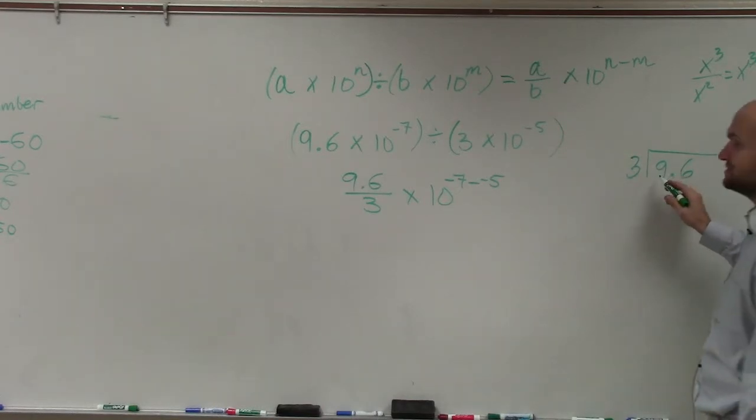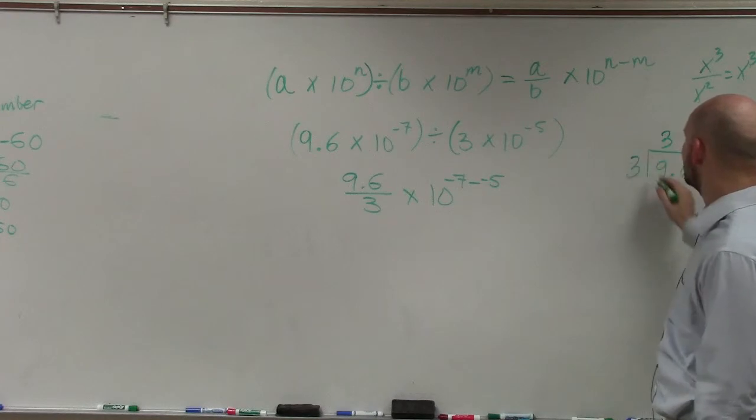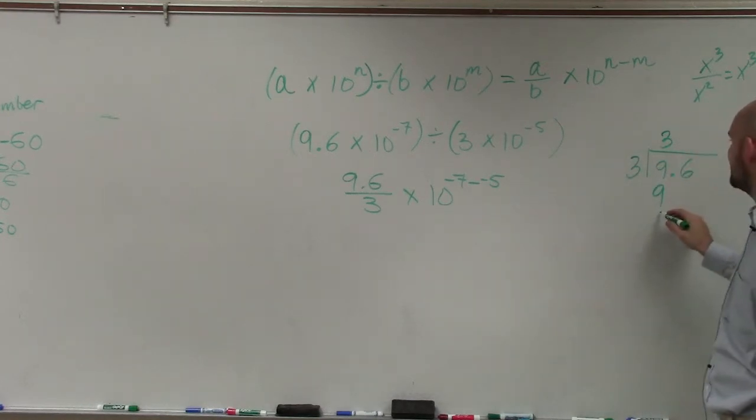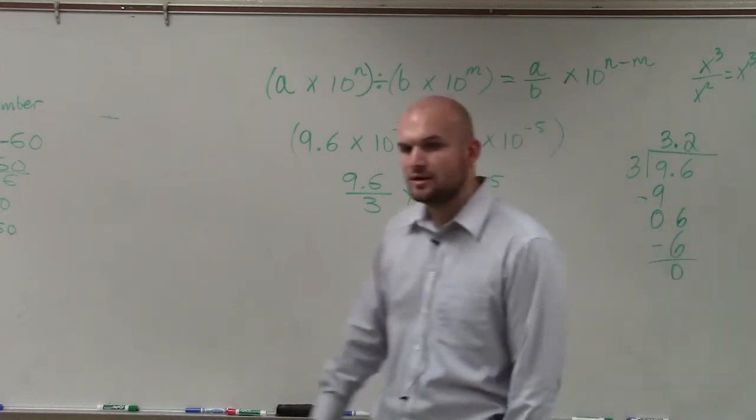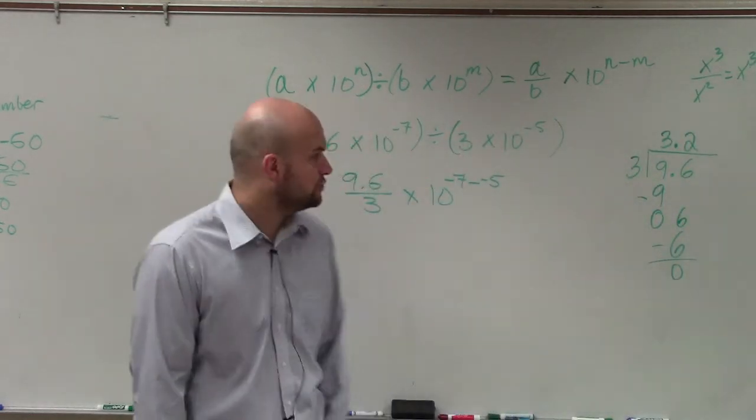So 3 goes into 9 three times. 3 times 3 is 9. Bring down the 0. 3 does not go into 0, so I'll bring in the decimal point and bring down the 6. 3 goes into 6 two times. 3 times 2 is 6. 0. So it goes in there 3.2 times.